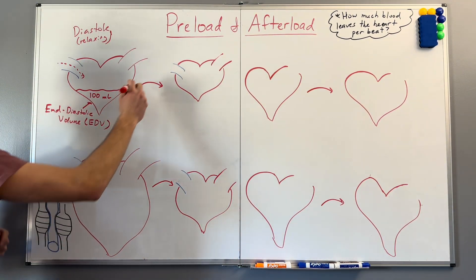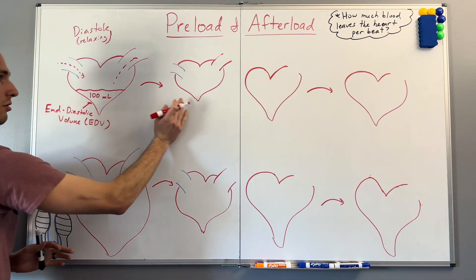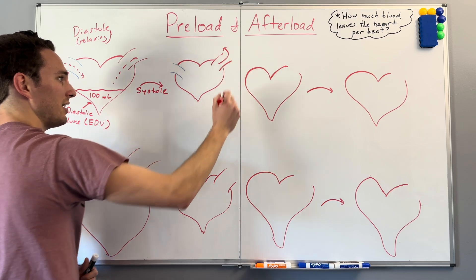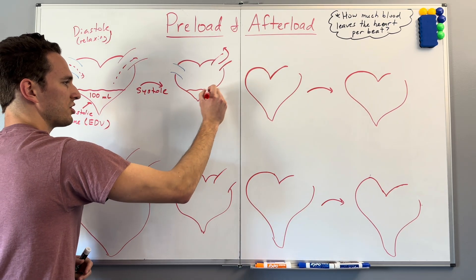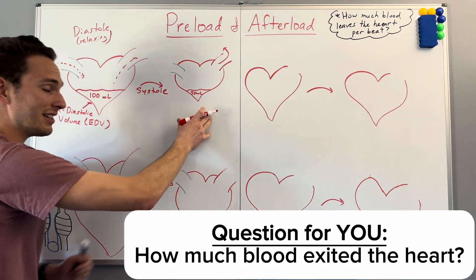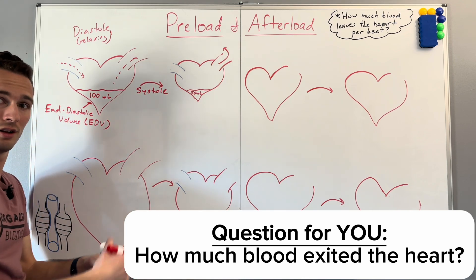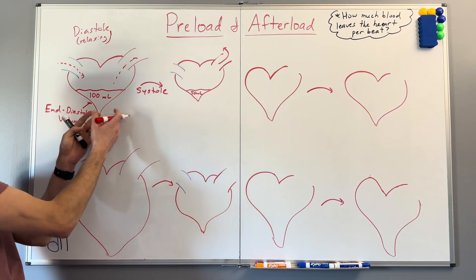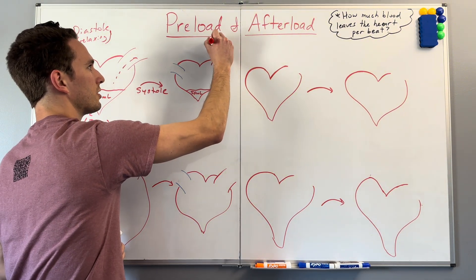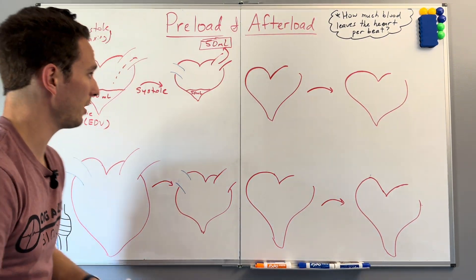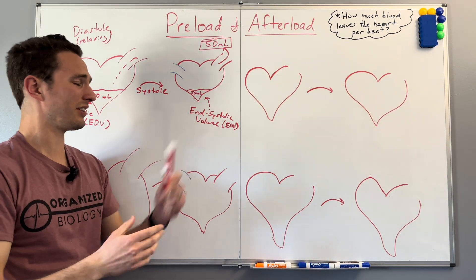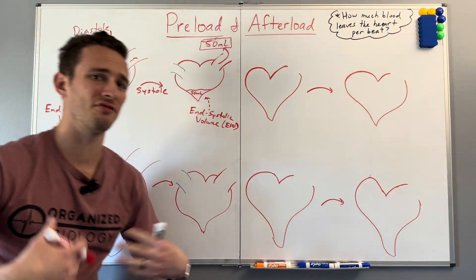In this case, we have that volume of blood. The heart is going to contract, beat, and throw that blood out. So after it goes through that contraction called systole, a lot of that blood will have exited, but there will also be some blood left over — about 50 milliliters — because the heart isn't perfectly efficient. So how much blood exited the heart? We've got 50 left over from the 100, so we have 50 milliliters leaving the heart. We still have that end systolic volume relatively high.